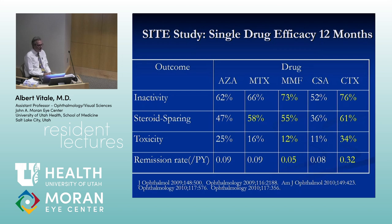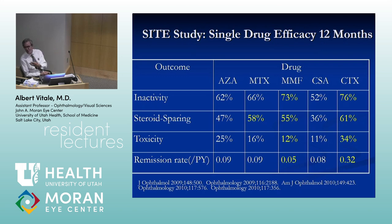The large retrospective SITE study collected data from five large uveitis practices in the United States. It showed that the anti-metabolites work about 60–70% of the time — meaning a fairly high percentage of patients don't respond — and the remission rate for anti-metabolites is fairly low. The remission rate for cytoxan (cyclophosphamide) is higher, but it comes at the price of significantly higher toxicity.